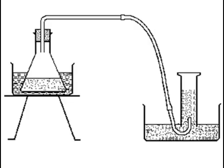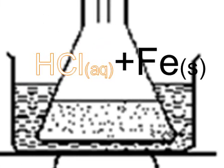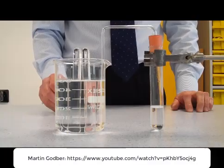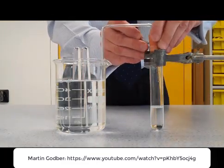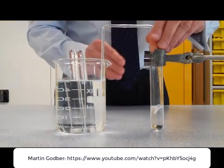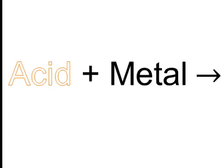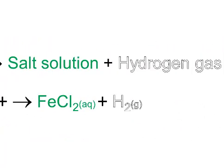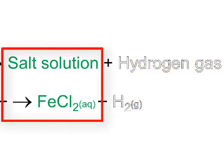We could test this empirically using the setup shown here. We take iron and we add hydrochloric acid. Now when one adds an acid to a metal, then you get hydrogen produced and also a salt solution.